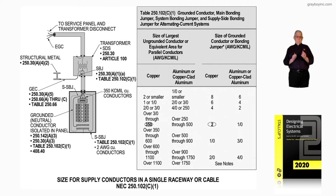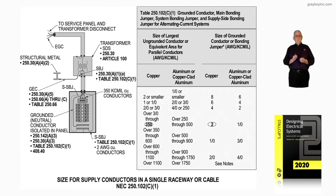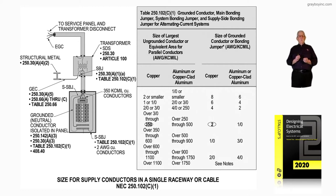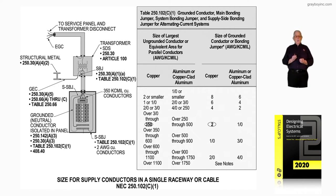To the left we have structural steel that meets the requirements of a grounding electrode in accordance with 250.30A4 item number 2. We also have listed the grounding electrode conductor per 250.30A5, using Table 250.66. If we're not using Table 250.66 to select the electrode, we would use 250.66A through C. Notice the grounded conductor itself is isolated in that panelboard in accordance with 408.40, as required by 250.142A and 250.30A.